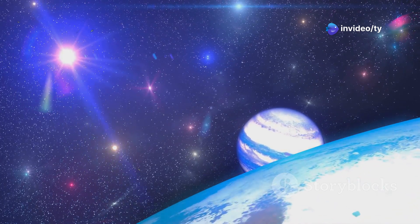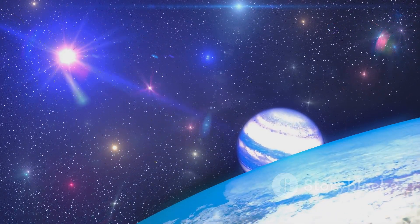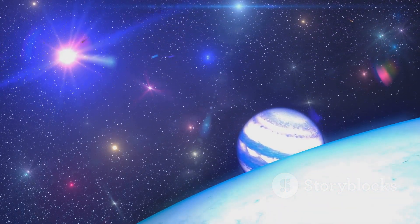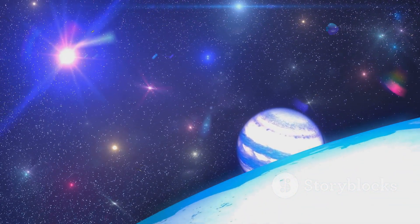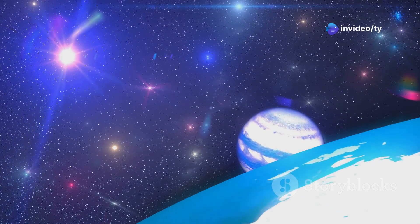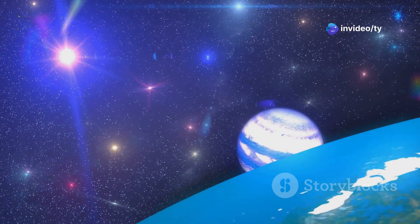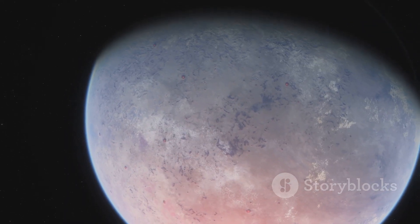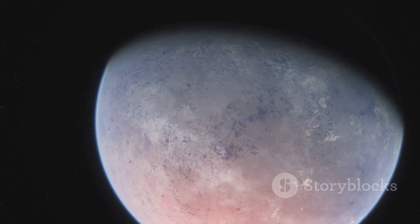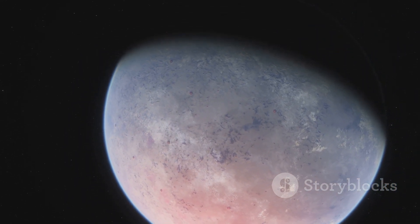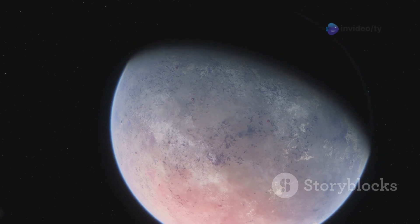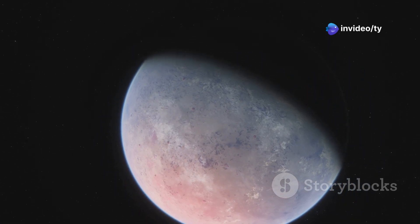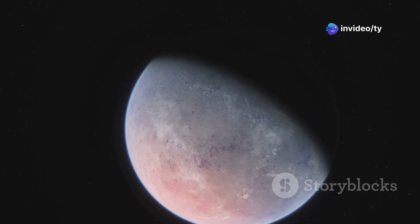The potential for such a planet to harbor life is tantalizing. Scientists speculate that if Kepler 452b has a rocky surface and an atmosphere, it could support a variety of life forms from simple microorganisms to more complex organisms. Kepler 452b is billions of years older than Earth. This means it has had a much longer time to develop and evolve. The age of this planet opens up fascinating possibilities for the types of life that could exist there.